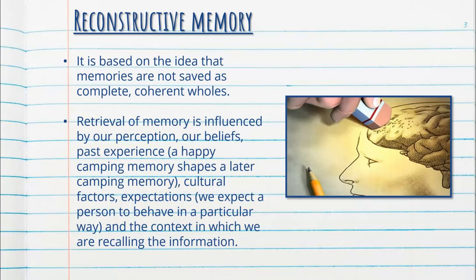Often our memories, if reconstructed, are like a piece of paper that's been put through a photocopier many, many times — it's never going to be exactly as it was originally, and there will be parts that are missing and possibly warped.